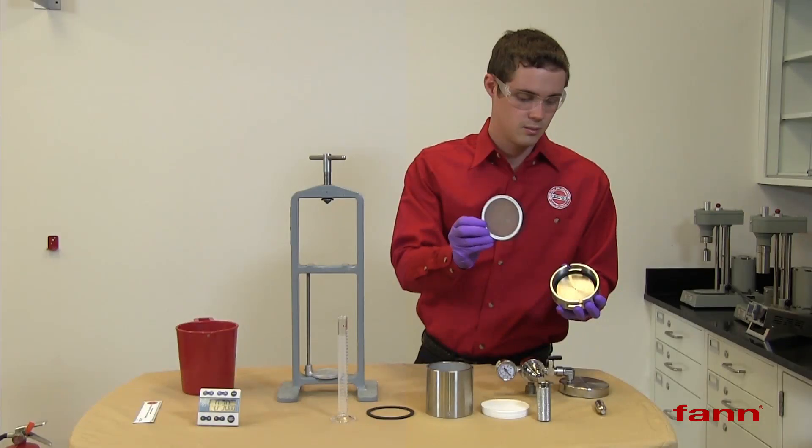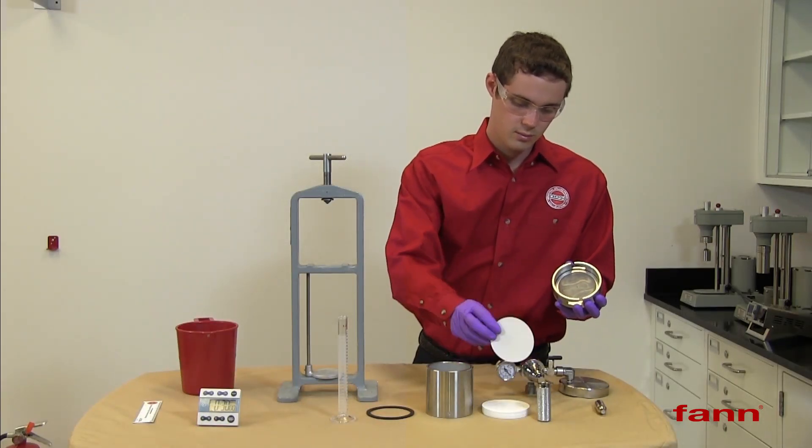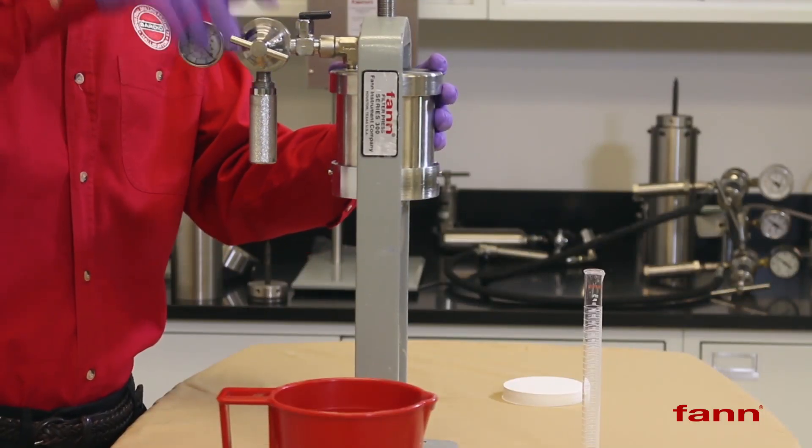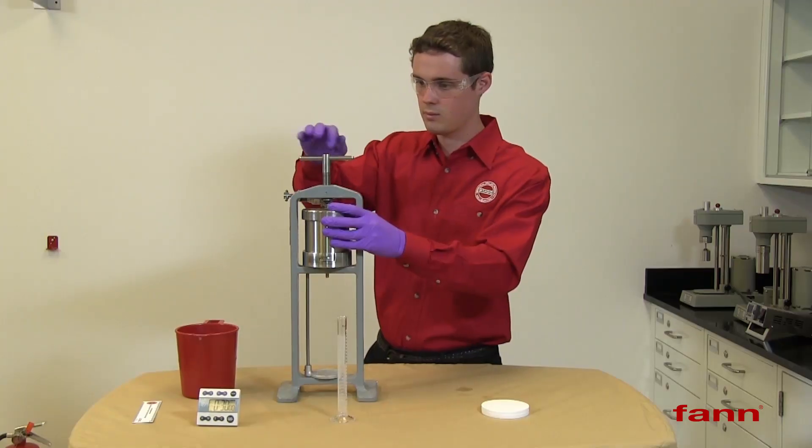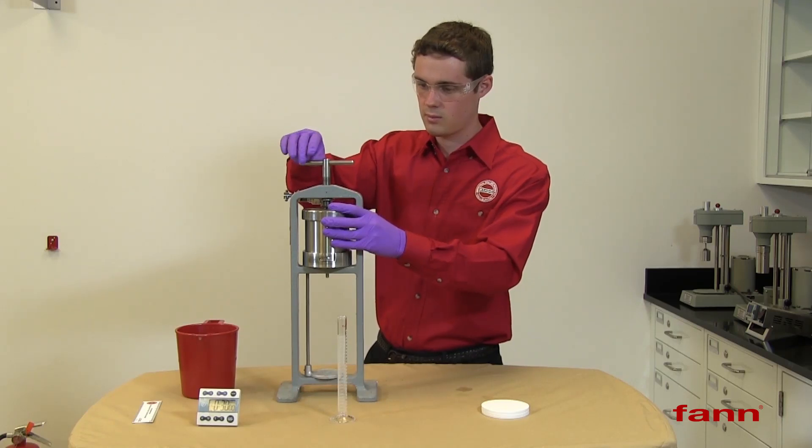We have the top air assembly. We need to add a gasket to this also. Attach this assembly to the top of the barrel. We'll be putting this cylinder under 100 pounds of pressure, so be sure the set screw is tightened securely.